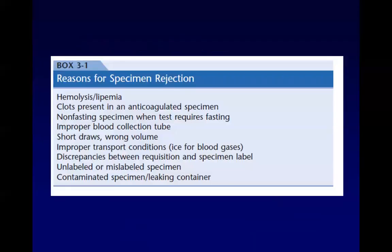Reasons for specimen rejection in the lab include hemolysis or lipemia, clots present in an anticoagulated specimen, non-fasting specimen when the test requires fasting, improper blood collection tube, short draws, wrong volume, improper transport conditions, discrepancies between the requisition and specimen label, unlabeled or mislabeled specimens with the wrong name, and contaminated or leaking containers.